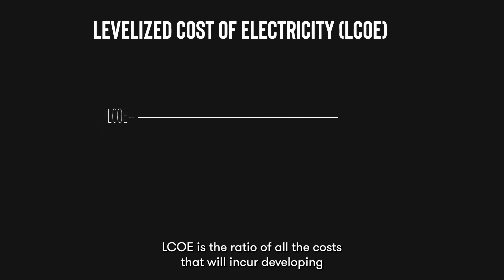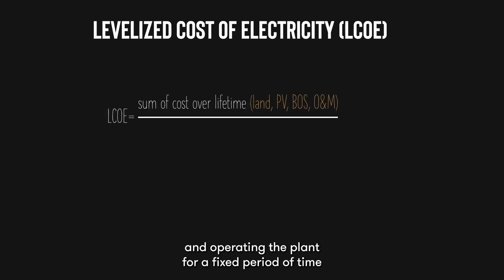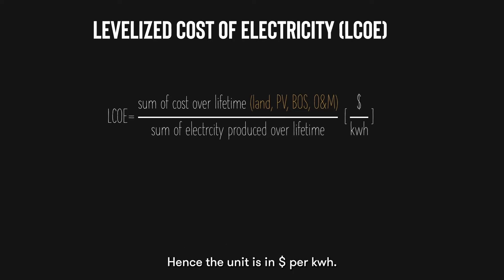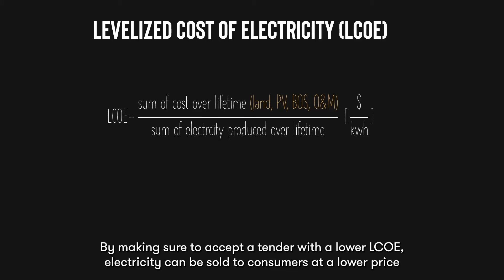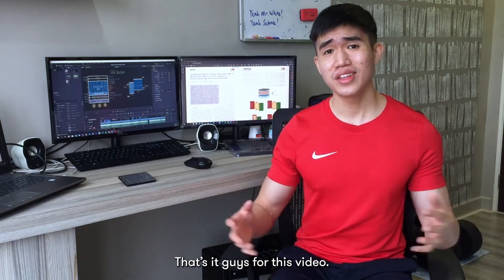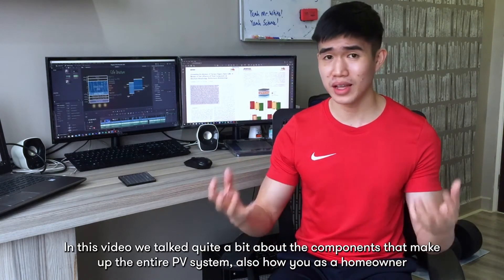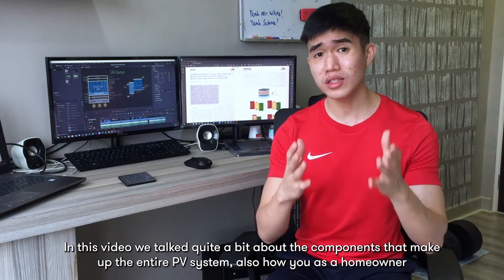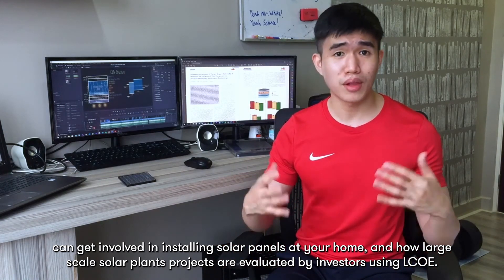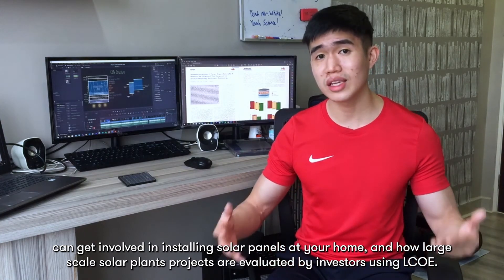LCOE is the ratio of all the costs that will incur developing and operating the plant for a fixed period of time, to the electricity output throughout the entire period. Hence, the unit is in dollars per kilowatt hour. By accepting a tender with a lower LCOE, electricity can be sold to consumers at a lower price and the solar plant can be operated at a higher profit margin. In this video, we covered the components that make up the entire PV system, how you as a homeowner can get involved in installing solar panels, and how large-scale solar plant projects are evaluated by investors using LCOE.